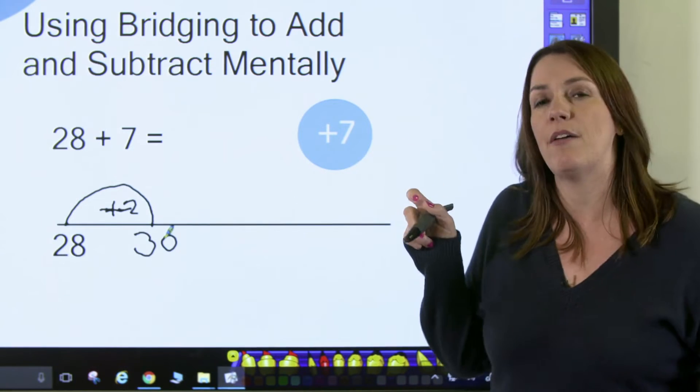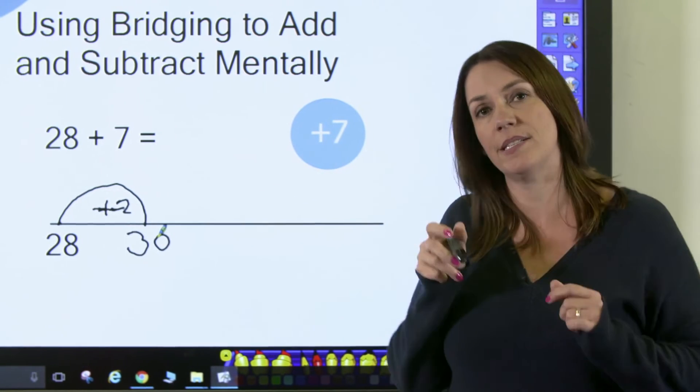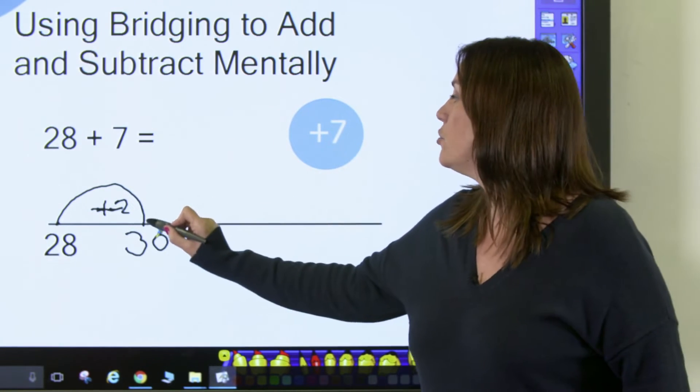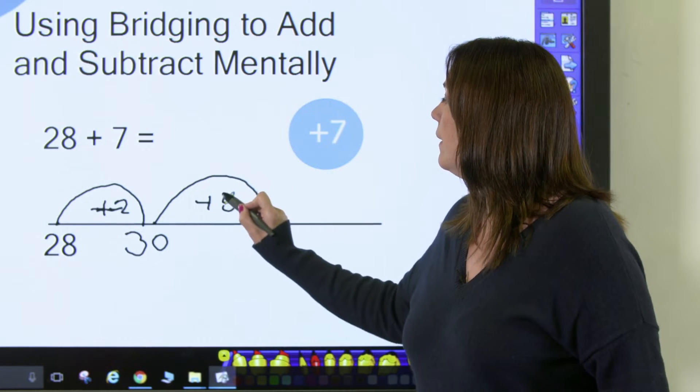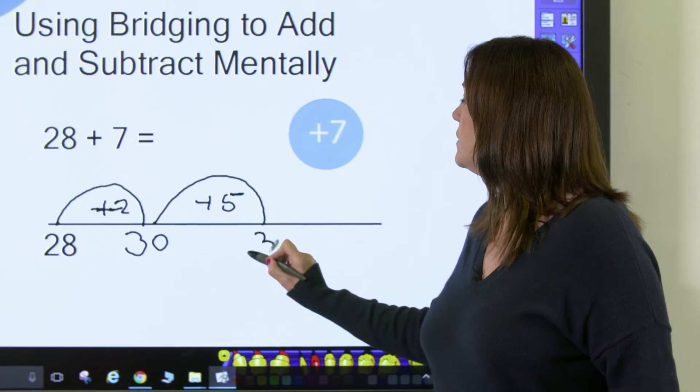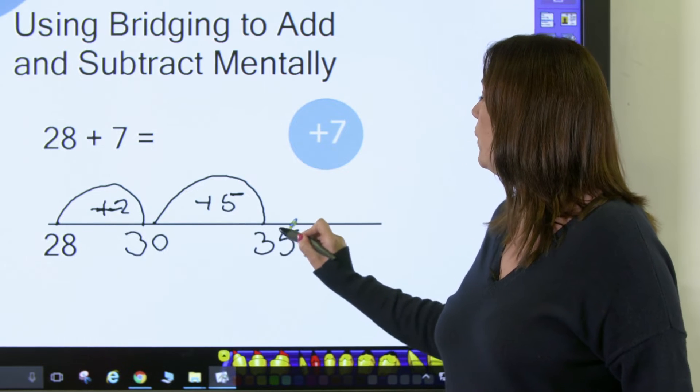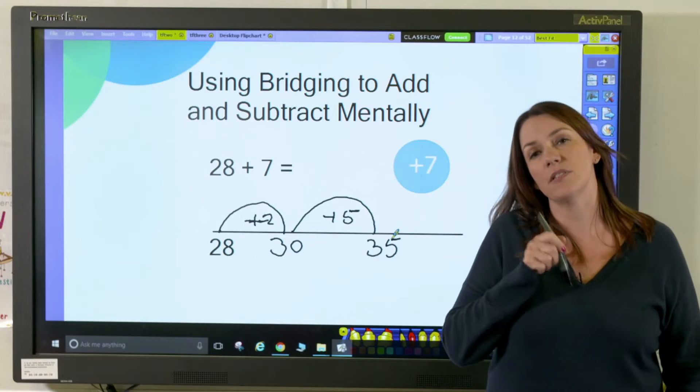So I've used 2 of my 7, and I know that 5 and 2 make 7, so I know that I now need to do a jump of 5, and that will take me to 35, which will quickly show me that the answer is 35.